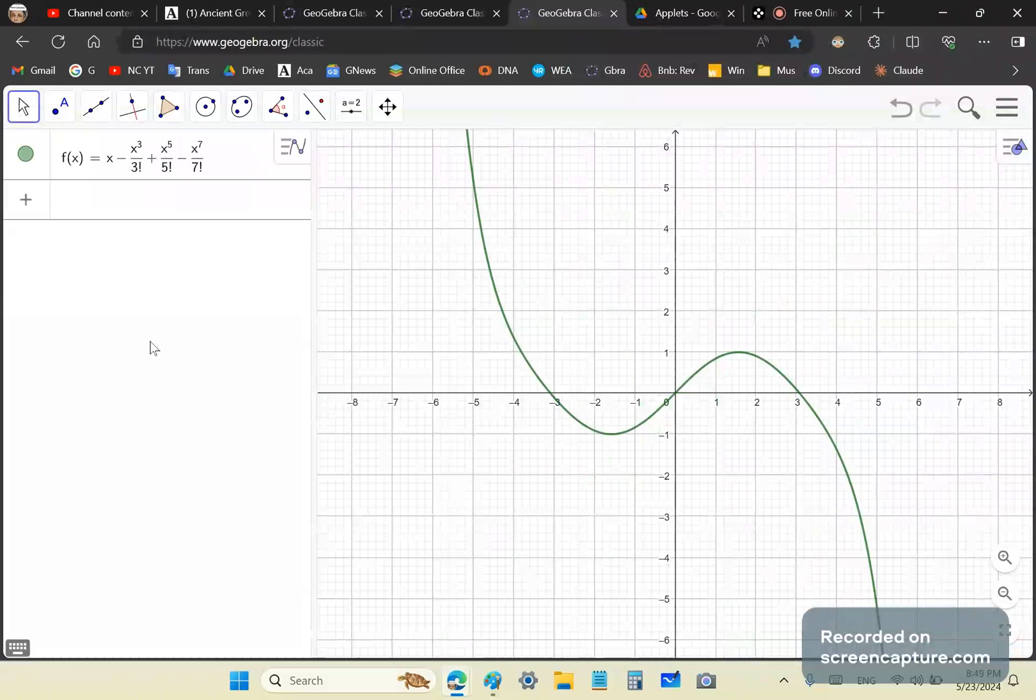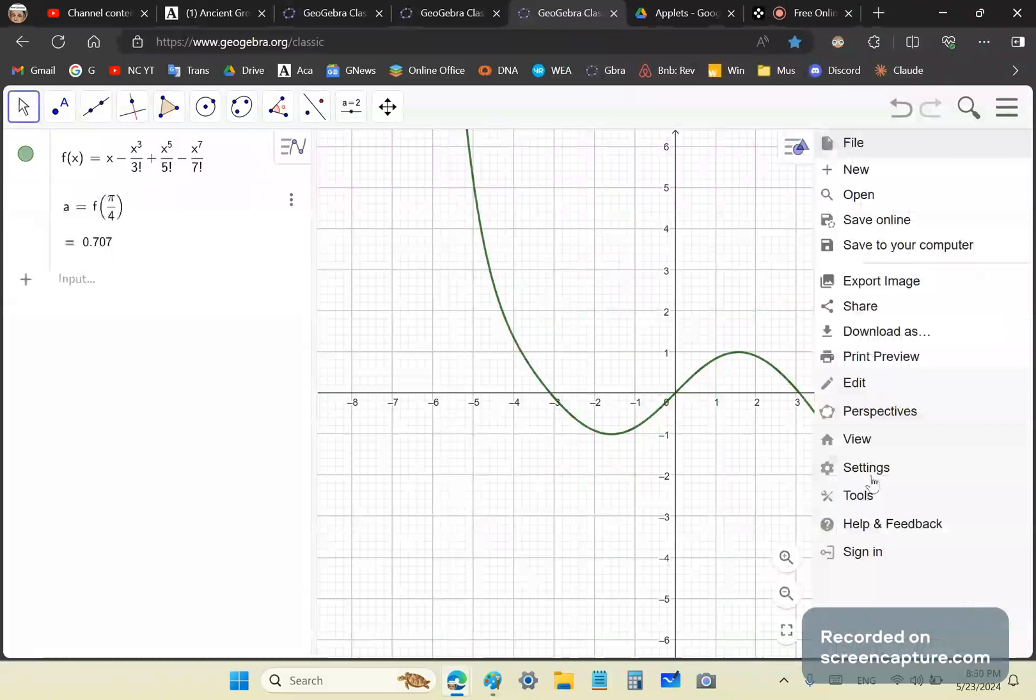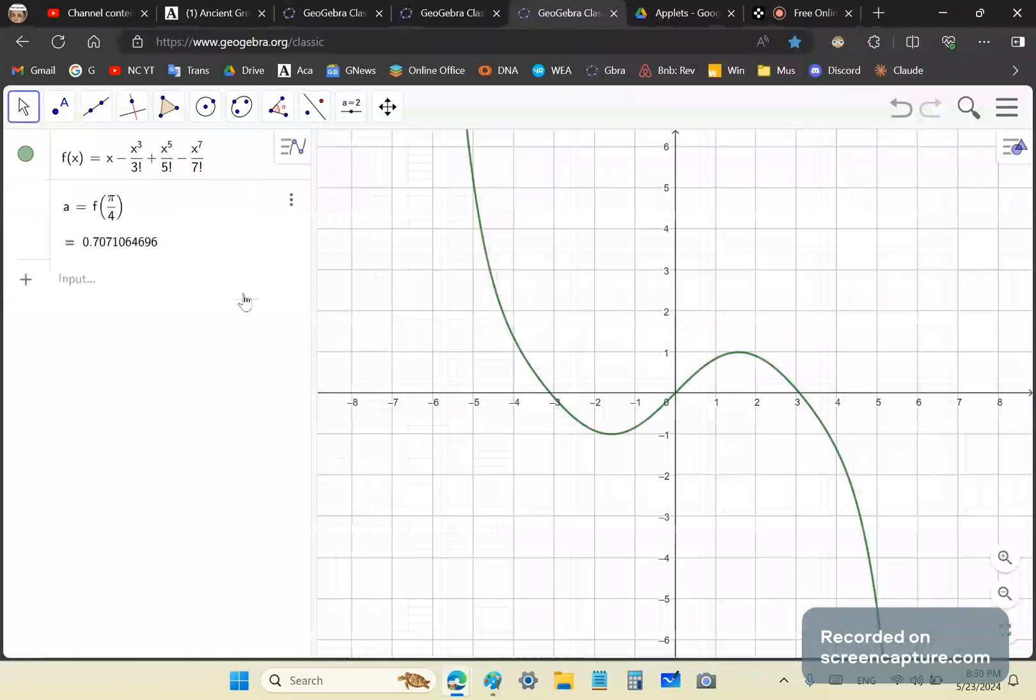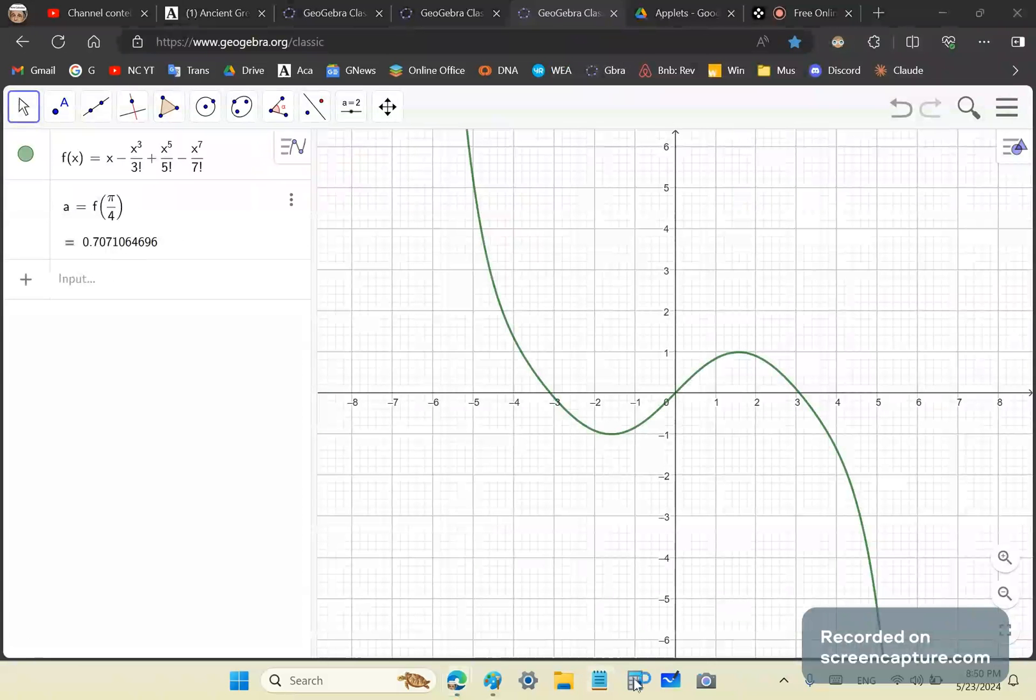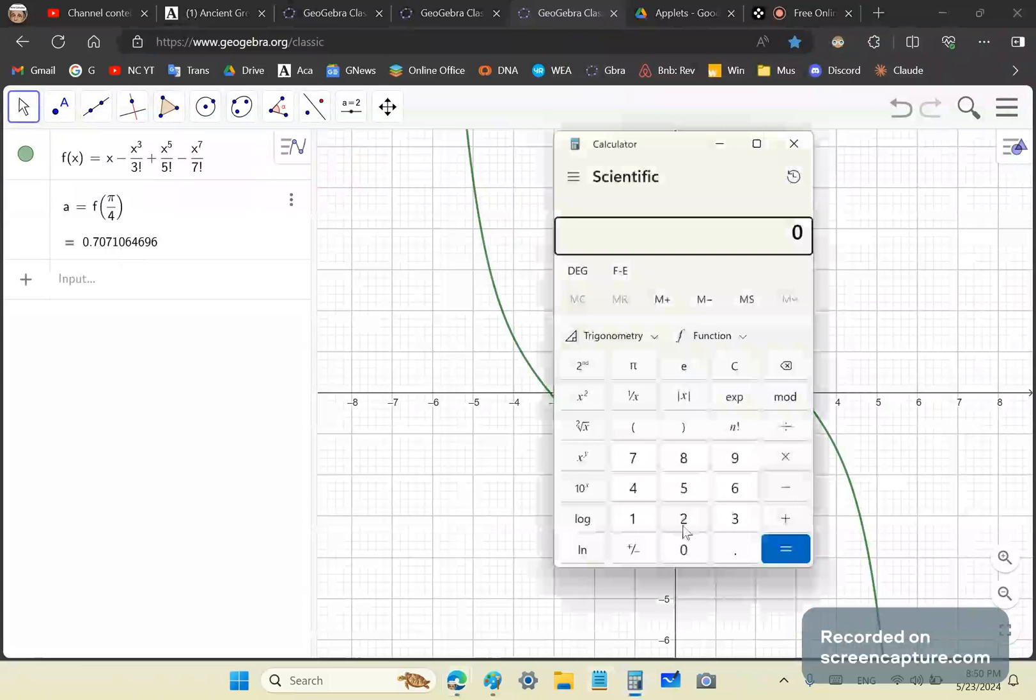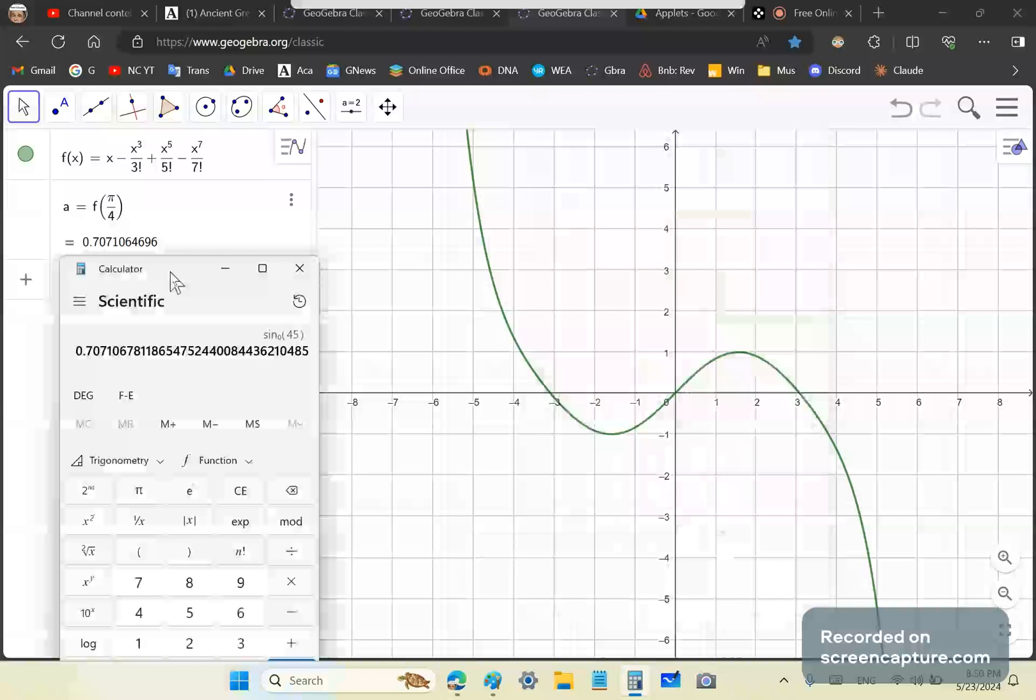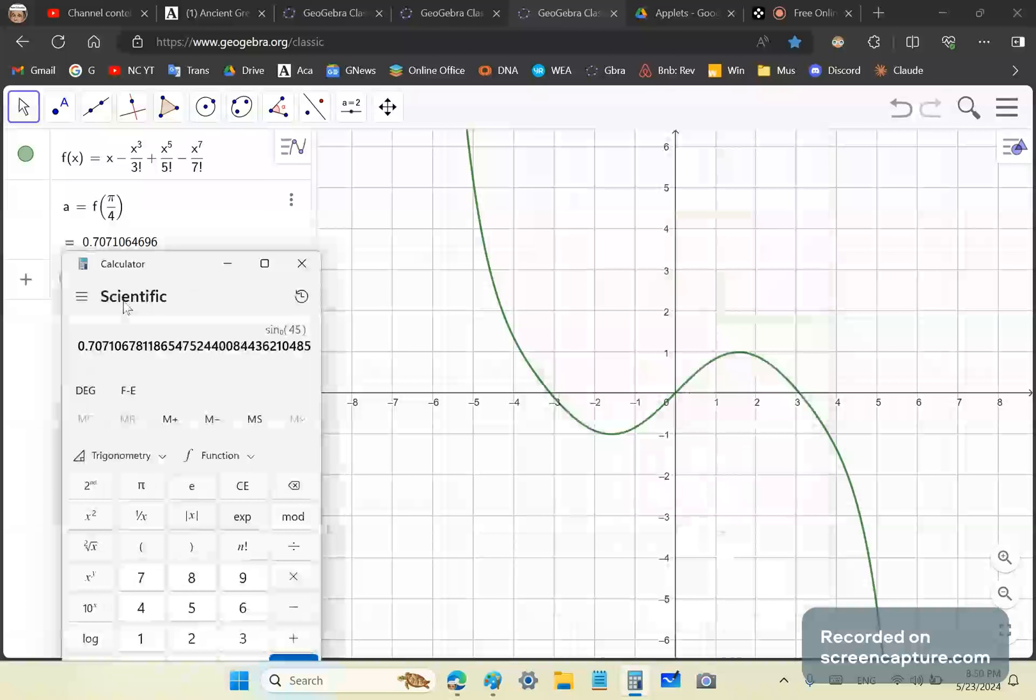Let's say four terms: x to the 7 divided by 7 factorial. So we've got four terms and we want to find f of pi over 4. Let's get some more decimal places, let's say about ten. So now with Newton's sine series this is the approximation you get.